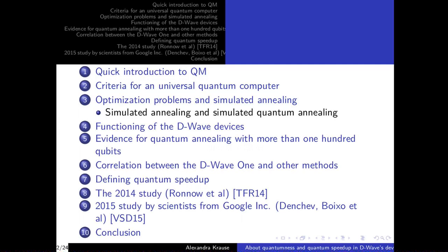After that I will go a bit more into the functioning of the D-Wave, which is not a universal quantum computer but an adiabatic one. So I will talk about optimization problems and the simulated annealing algorithm, which most of you will know, as it is a classical algorithm which perhaps some of you have implemented so far.